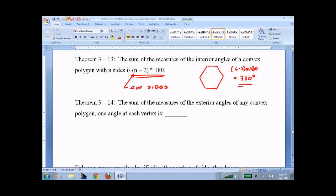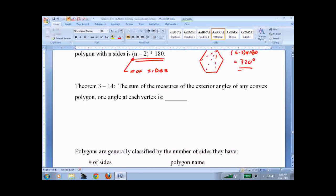Or you could just look at it and say, one, two, three, oh, four triangles, four times 180, 720. That all makes sense.